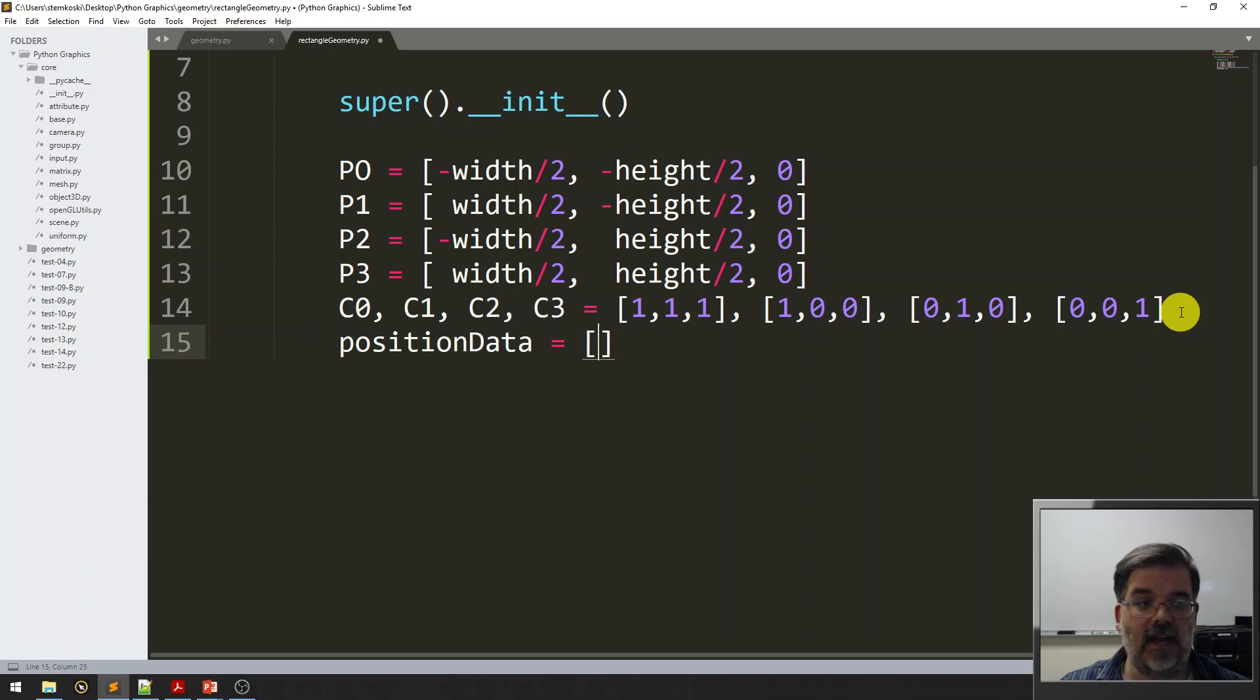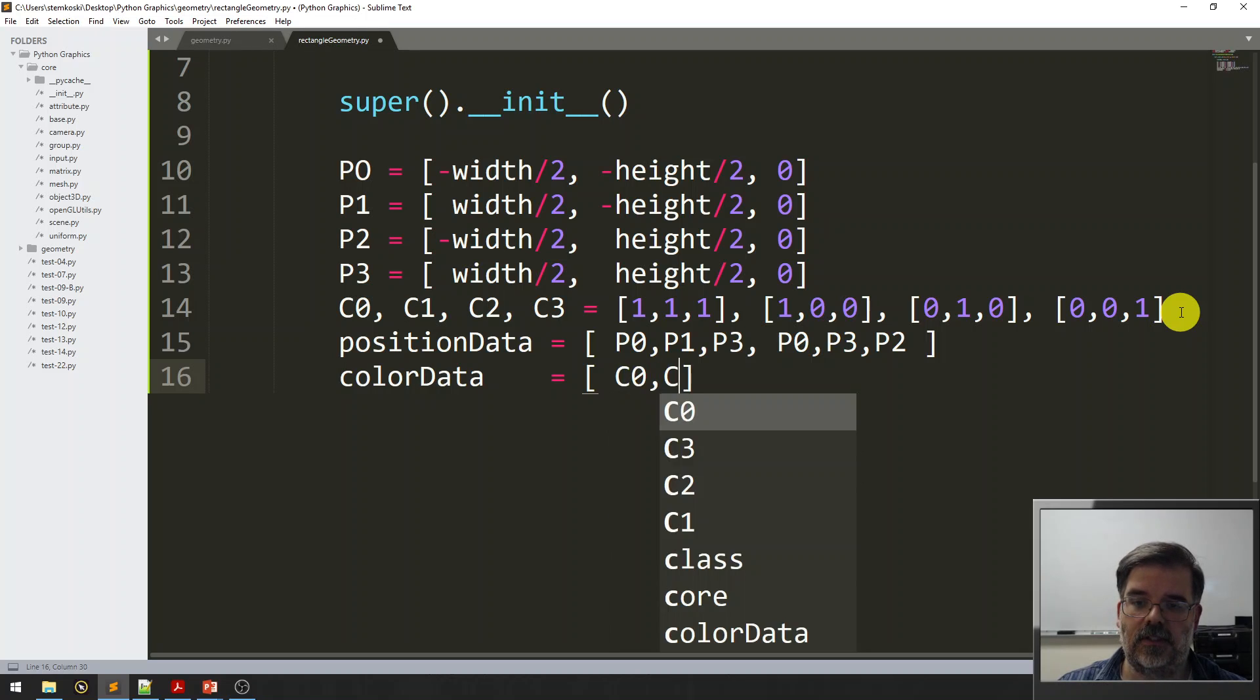The position data, let's collect that into an array. That's P0, P1, P3. That was the first triangle. And P0, P3, P2 was the second triangle. And color data, I want that to look exactly the same. So that's C0, C1, C3, C0, C3, C2. I've got the arrays of data.